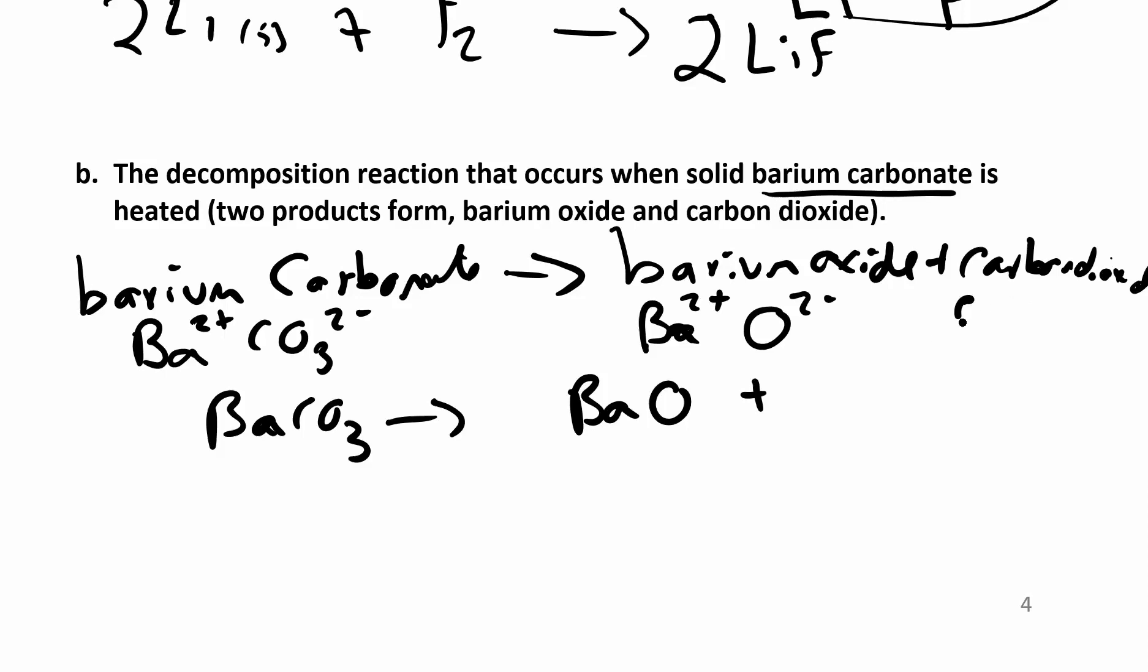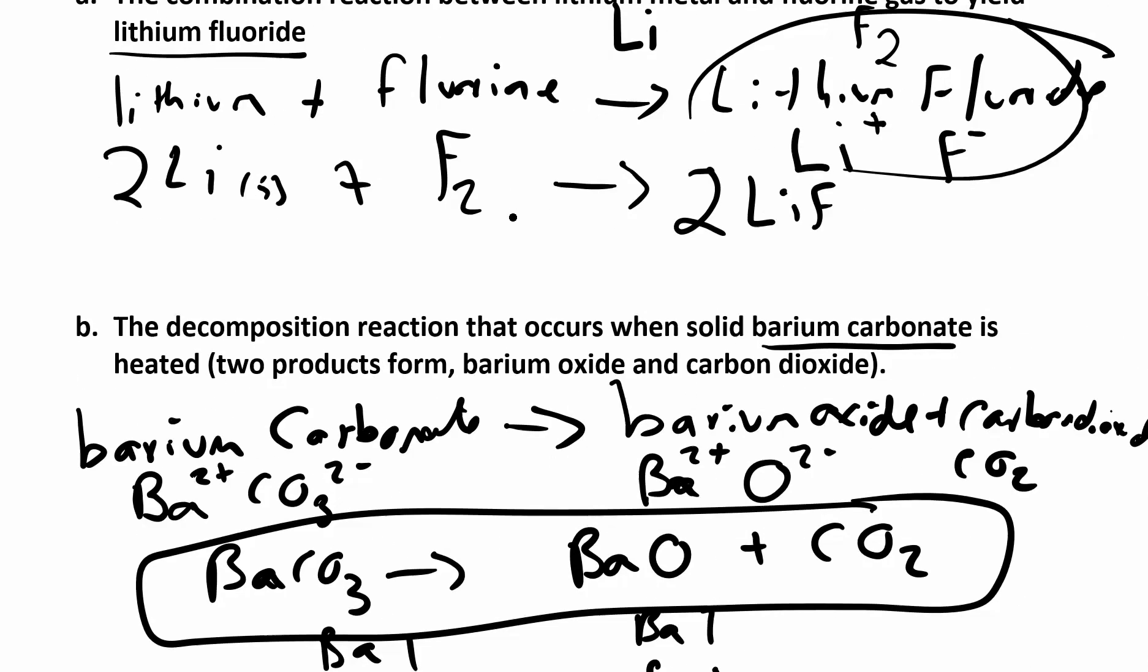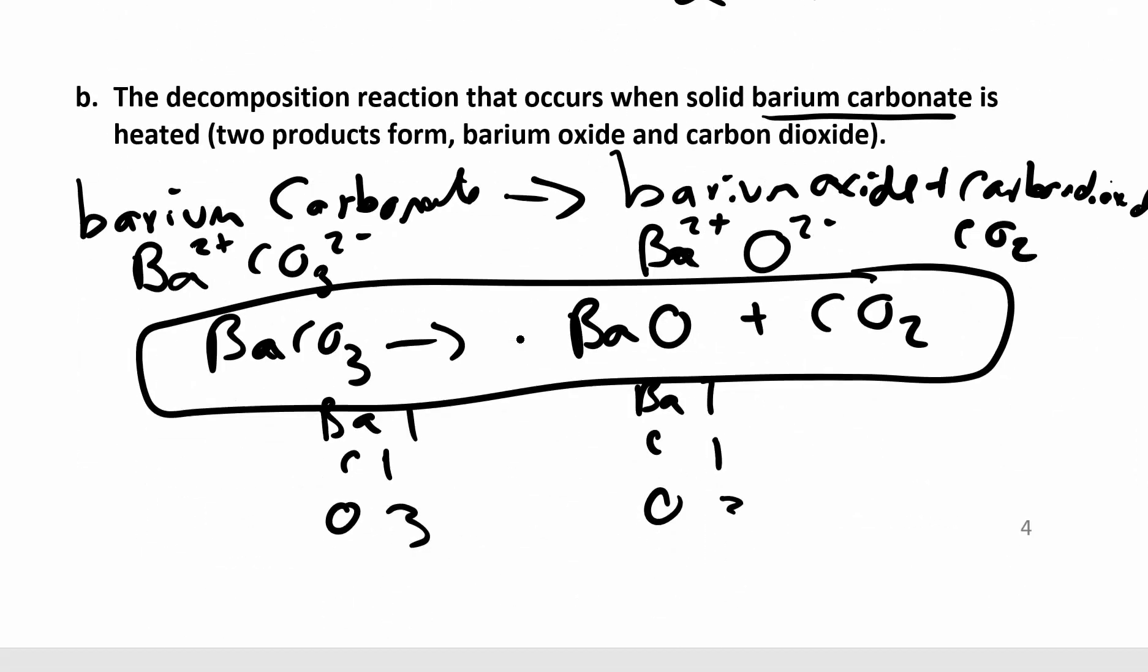Carbon dioxide is just CO2. Now you can balance. I have one barium, one barium. I have one carbon, one carbon. I have three oxygens - one, two, three oxygens. So this is balanced. That's our final balanced equation. Don't worry about the states of matter yet. We'll worry about that in chapter four. That was an example of a decomposition reaction.